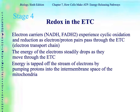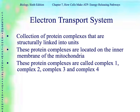So here is our last stage, stage four, which is a redox reaction in the electron transport chain. The electron carriers NADH and FADH2 are going to experience cyclic oxidation and reduction — redox — as the electron and proton pairs pass through the electron transport chain. The energy of these electrons steadily drops as they move through the chain. Energy is tapped off the stream of electrons by pumping protons into the intermembrane space of the mitochondria — you already learned this in photosynthesis. The electron transport system is a collection of protein complexes structurally linked into units, all on the inner membrane of the mitochondria.